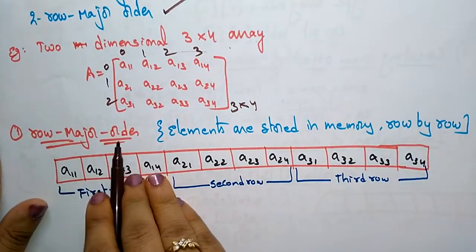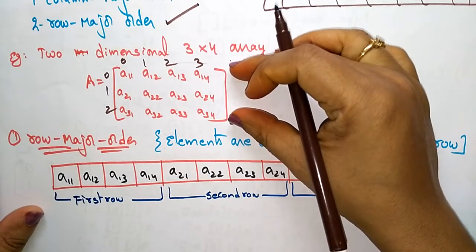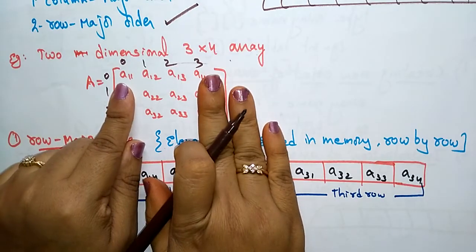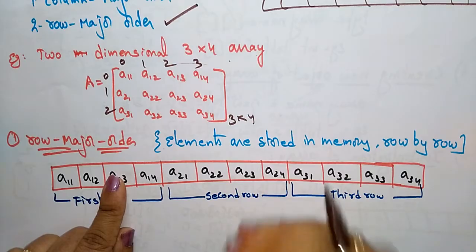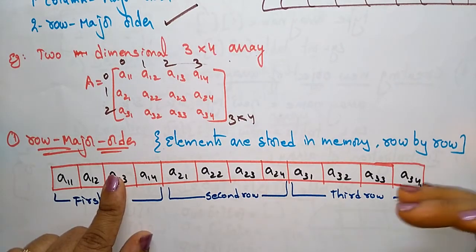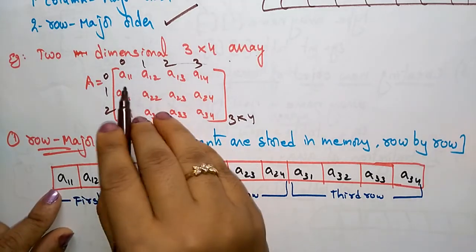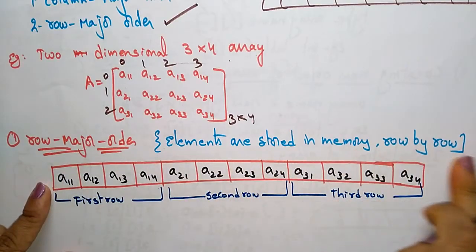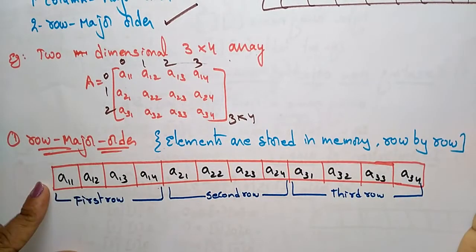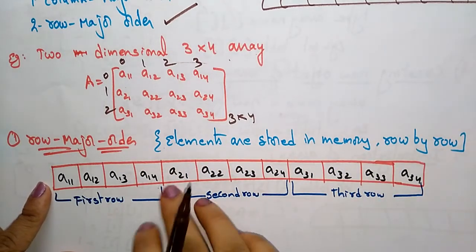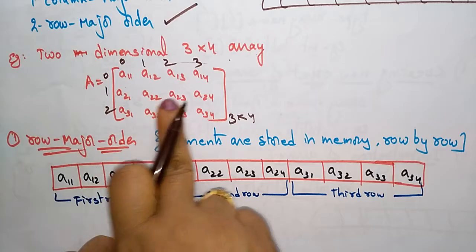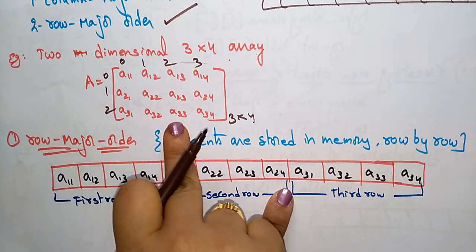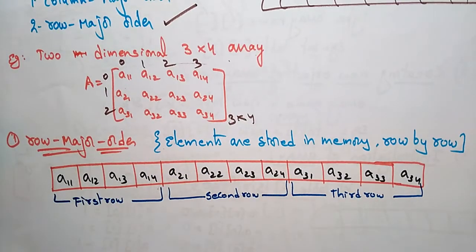If you want to store the data in row major order, the elements are stored in memory row by row. So this array stored in row major order would have the first row: a[1][1], a[1][2], a[1][3], a[1][4] — stored sequentially in linear form. After that, the second row: a[2][1], a[2][2], a[2][3], a[2][4]. Then the third row: a[3][1], a[3][2], a[3][3], a[3][4].